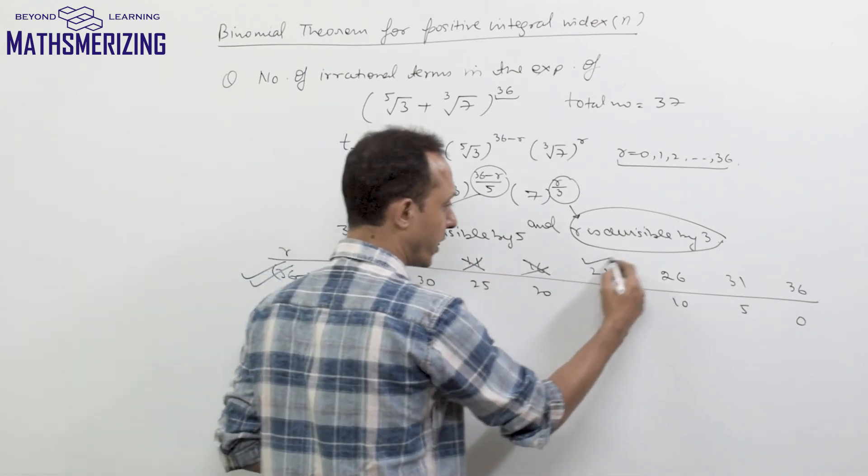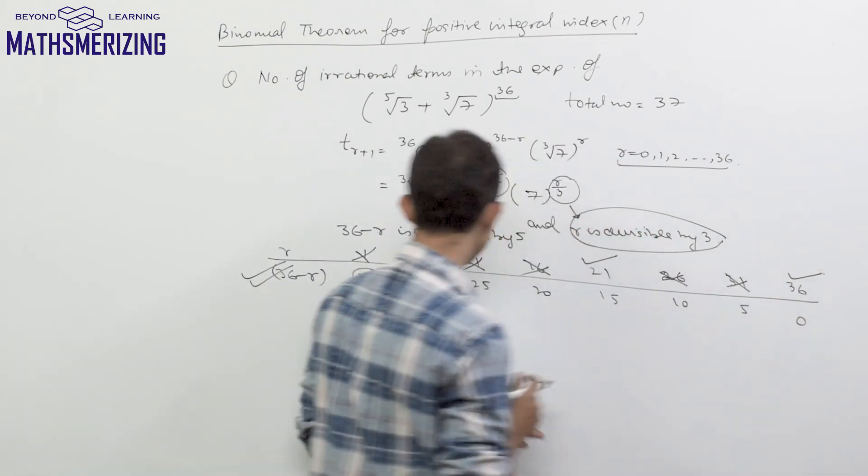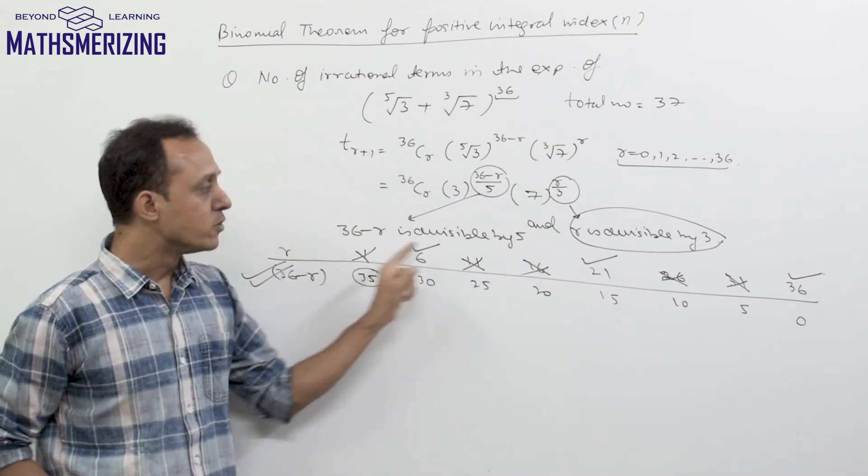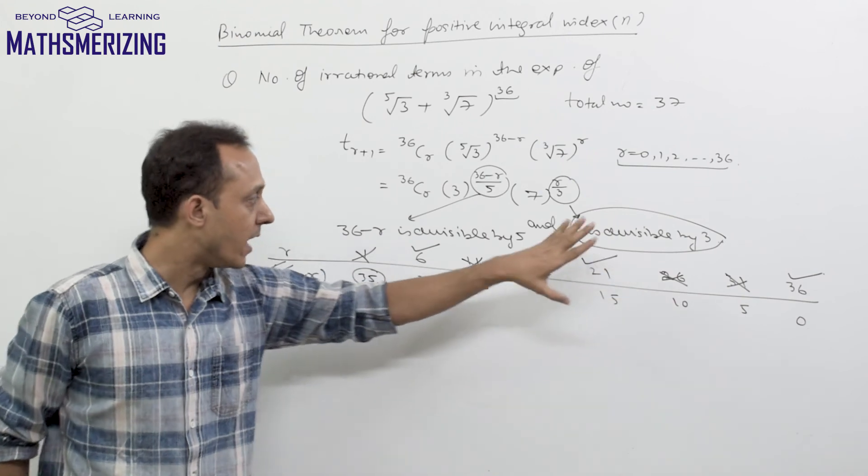21 is, 26 is not divisible by 3, also 31 and 36. So out of all the values of r, only three values 6, 21, 36 are divisible by 3. So out of these 37 terms,